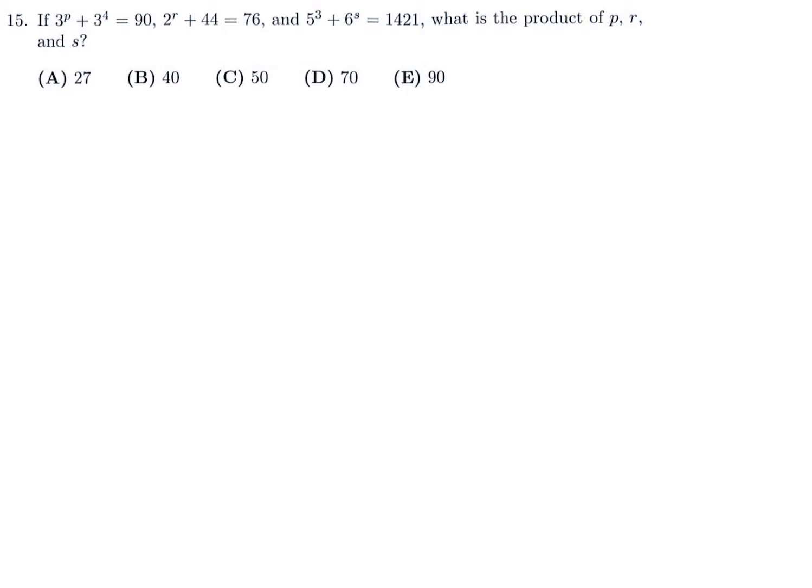If three to the power of P plus three to the power of four is 90, two to the power of R plus 44 is 76, five to the power of three plus six to the power of S is 1421, what is the product of P, R, S? So this question is basically saying find P times R times S. One by one we'll find all three. Three to the power of P plus three to the power of four is 90. So three to the power of P is 90 minus three to the power of four. Three to the power of four is 81. So that would be 90 minus 81, and that is nine. So three to the power of P is nine. Three to the power of P, nine is three squared. So that means p is equal to 2. There we go. We just got one.